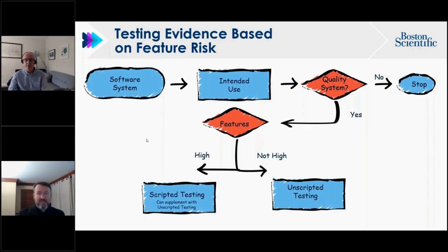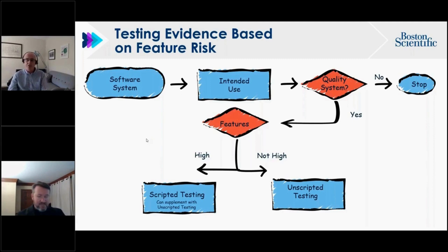If a system is determined to be in the quality system, they conduct another layer of risk assessment by breaking the system down into its various features. For example, a CAPA system would have features like non-conformance initiation or non-conformance approval. The guidance suggests that for high-risk features, scripted testing should be used, supplemented with unscripted techniques such as exploratory testing or error guessing. For features not classified as high risk, unscripted testing alone can be applied.